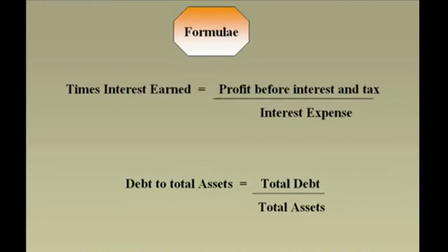For debt to total asset, the cutoff is 40%, which is deemed acceptable — the lower the better. Anything above 50% is considered really bad. If a loan officer computes the debt to total assets ratio and it's above 50%, it means that creditors have a claim on more than 50% of your company. Now I'd like you to compute the debt to total asset and times interest earned ratio for Jackville Company — parts L and M. Stop this recording and have a crack at it.